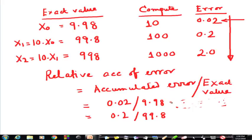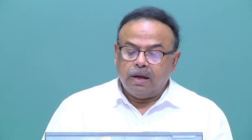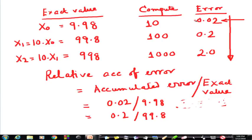There are some cases where the accumulation of error goes on increasing. If the rate of accumulation of error decreases, or if the absolute accumulated error increases but the rate of relative error decreases, then we call it a stable algorithm. We must be very conscious about the rate of increase of this error.